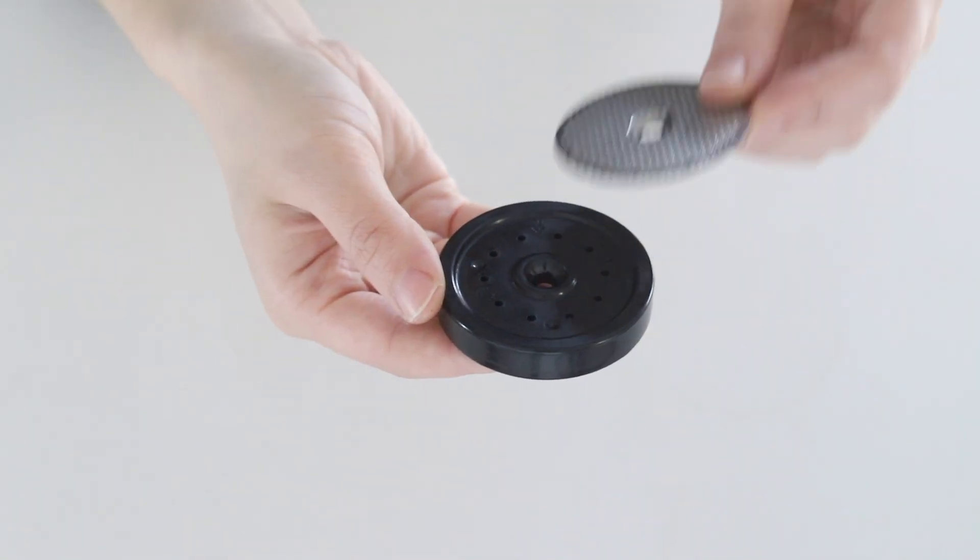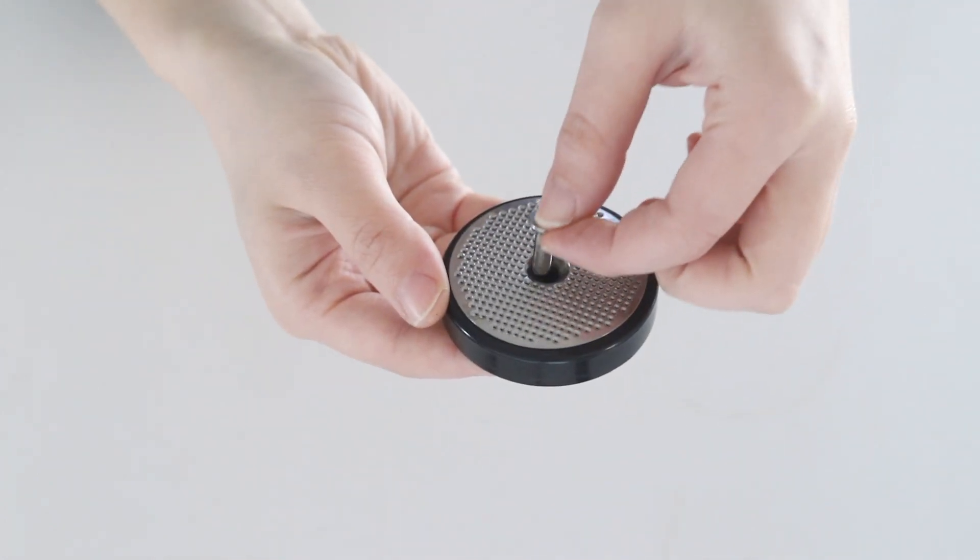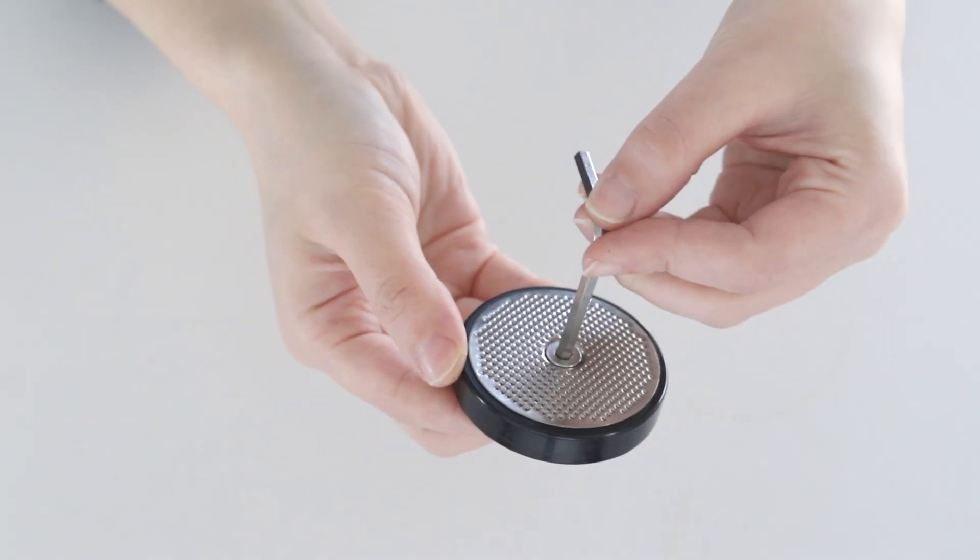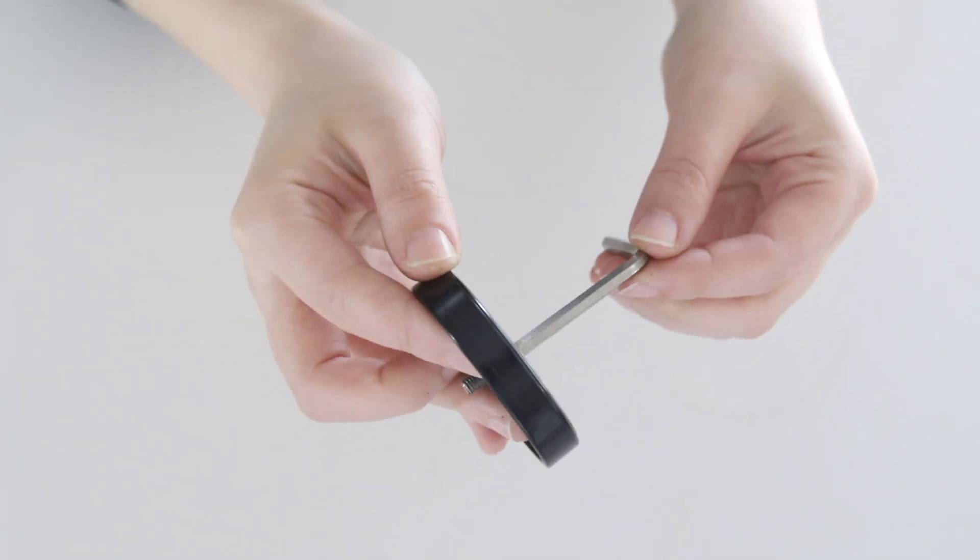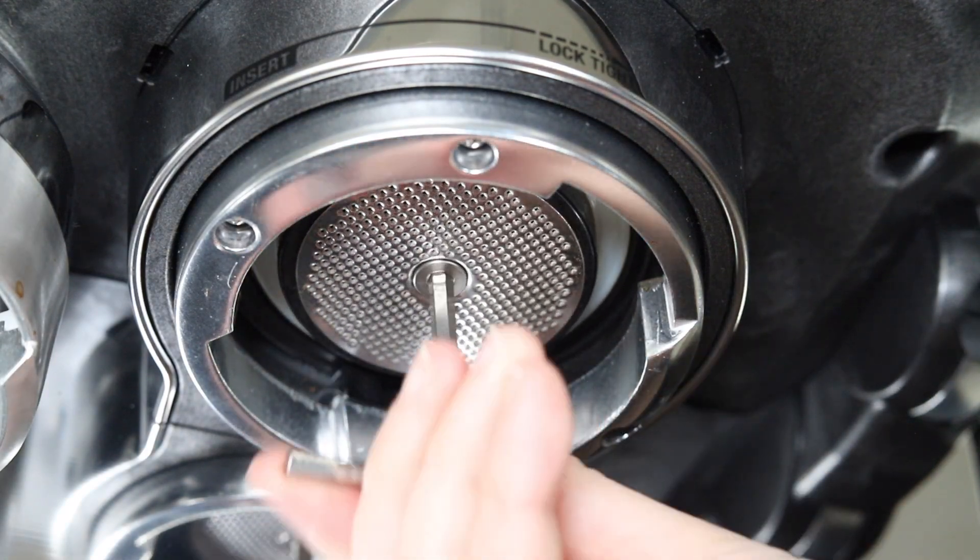Next, place the shower screen on top of the inner shower screen. Insert the screw back onto the shower screen. Then place the assembled screens on top of the Allen key. Use the Allen key tool to reinsert the shower screen back onto the group head by rotating clockwise.